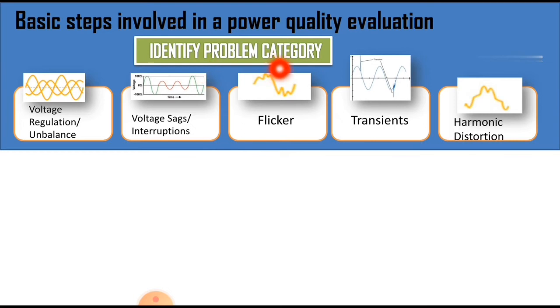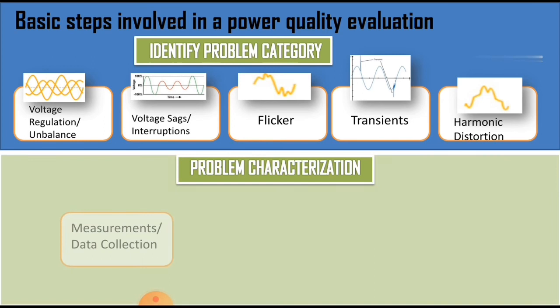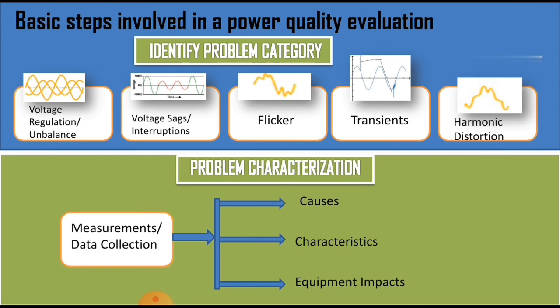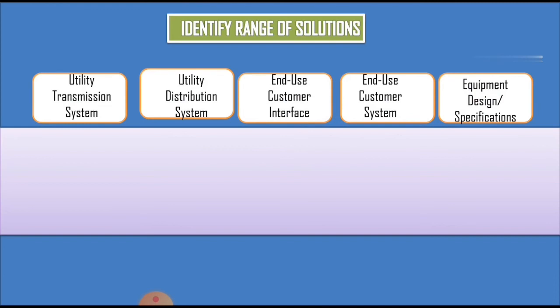Problem characterization depends entirely on measurements and data collection across the entire power system. These measurements provide values related to causes, characteristics, and equipment impacts. When identifying the range of solutions, you must identify whether the problem lies at the utility transmission system, utility distribution system, end user customer interface, end user customer system, or the equipment design or specifications.